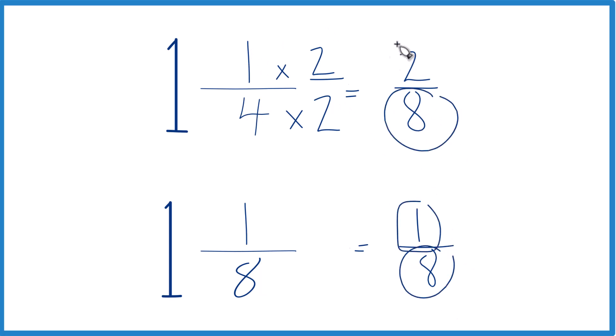We can just compare these numerators, and we'll know which is larger. So 2 is greater than 1, so 2/8, that's going to be larger than 1/8.